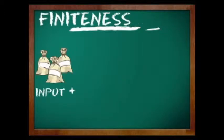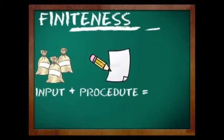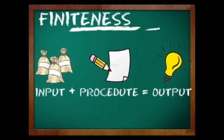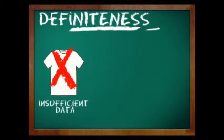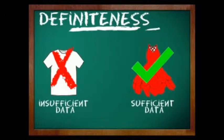Finiteness means an algorithm must terminate or finish after a finite number of steps. There must be an ending statement or conclusion that will determine the final output. Definiteness is ensured if every step of an algorithm is precisely defined.